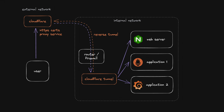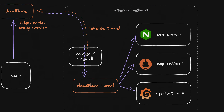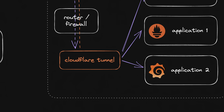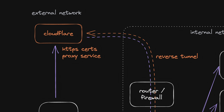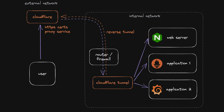To first understand the problems with this service we need to take another look at its architecture. This is the diagram I've shown before and explained in my tutorial. Let's assume you decide to use Cloudflare tunnels in your home lab because you want to give somebody access to an internal service behind your router or firewall. You install a small application by Cloudflare in your internal network that initializes a secure reverse tunnel from inside to Cloudflare, transmitting all data from the user to the actual application and vice versa. Cloudflare acts as a proxy service to handle HTTPS, certificates and DNS entirely for you.